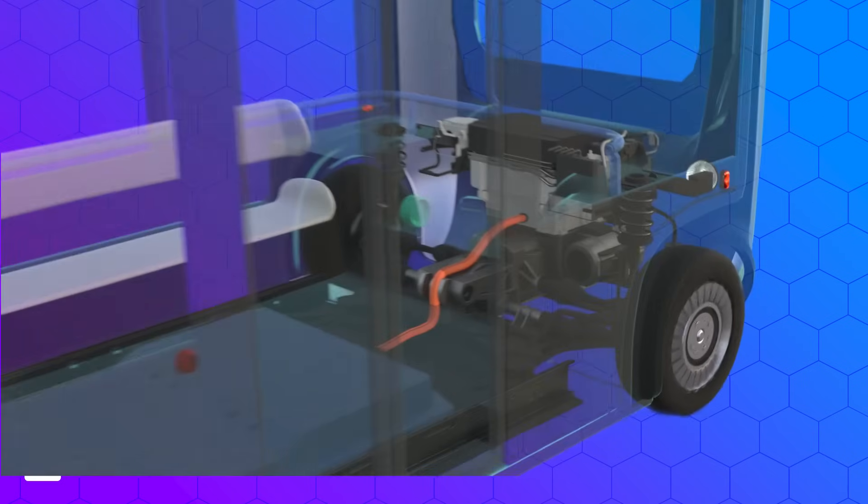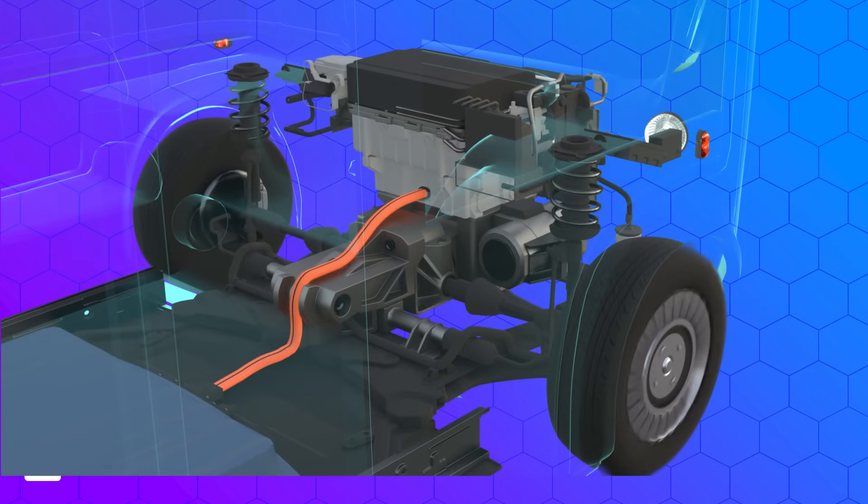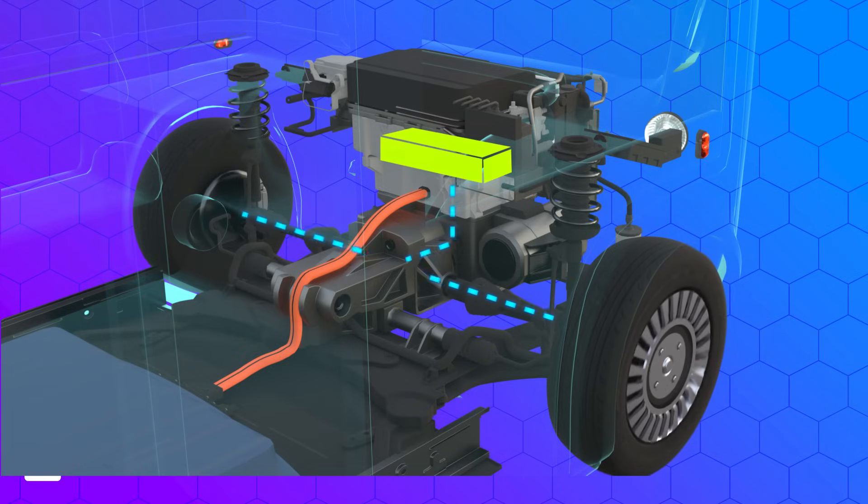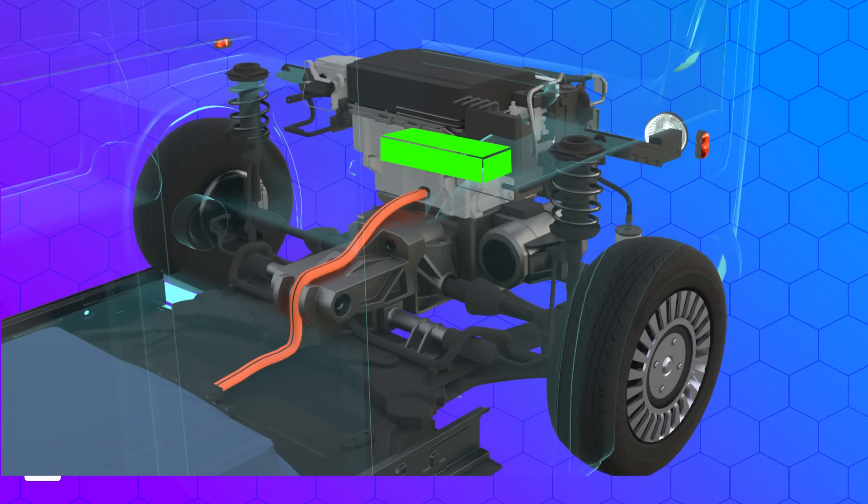Consider an electric bus. Supercapacitors are often integrated into the braking systems of electric buses. When the bus brakes, kinetic energy is converted into electrical energy and stored in the supercapacitors. This stored energy can then be quickly discharged to assist with acceleration, reducing reliance on the main battery.